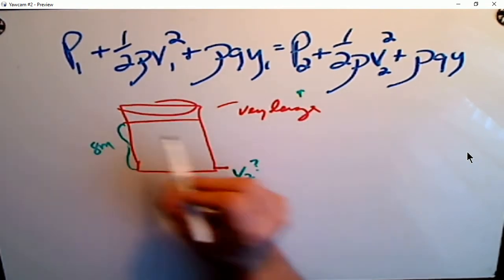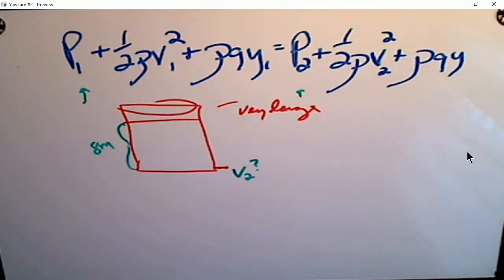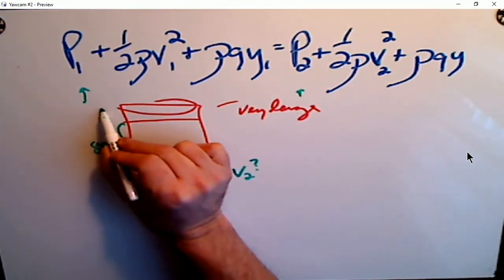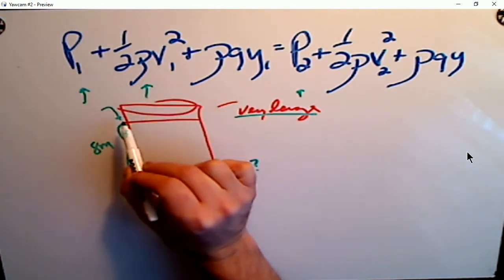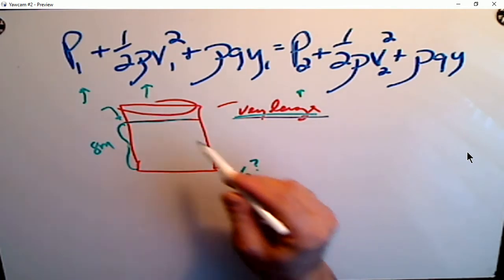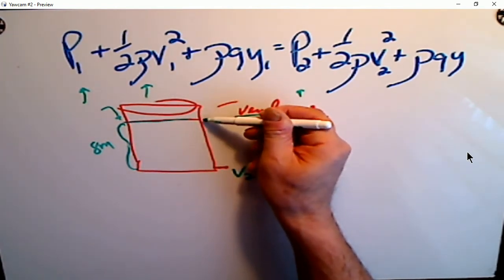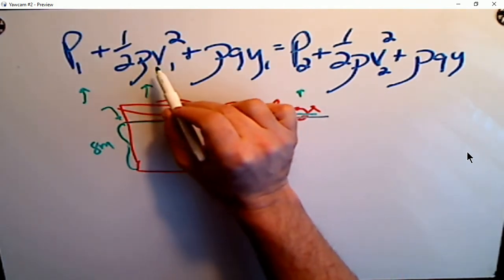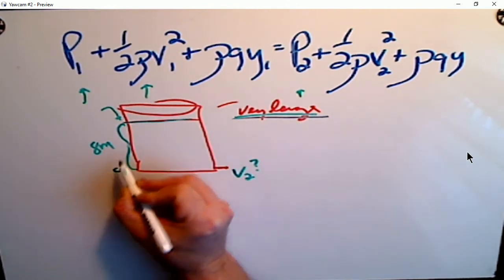The pressure—we're going to assume the atmospheric pressure here versus here is zero, or I should say, no difference between the two, the difference being zero, so we don't have to worry about those two. How fast this is going down—if this is a very large tank, we could say that this goes to zero because it's not moving down very fast on a very large container. The ratio of v1 to v2 is a very large number, very small amount of velocity for this going down versus this going out this hole, so we can make that go to zero.